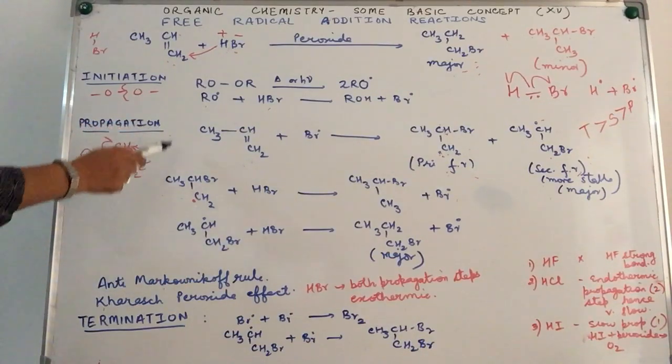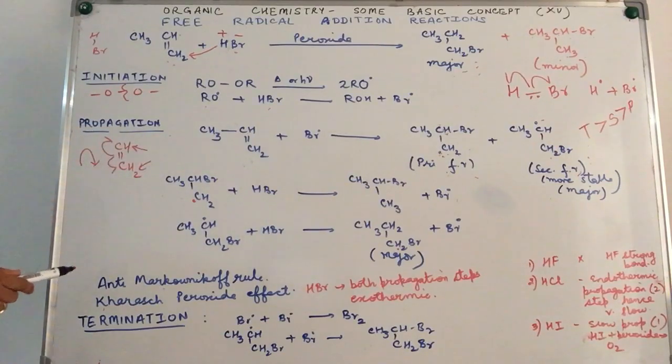In this particular reaction, both the propagation steps are actually exothermic. Exothermic means loss of energy is taking place. Loss of energy means greater stability. This supports the reaction and the reaction with HBr can go forward.